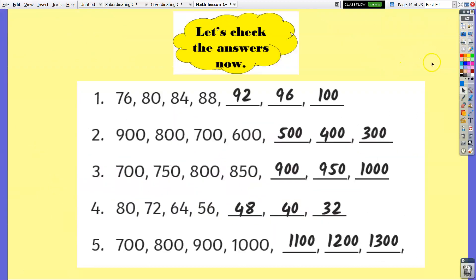Time is up. Now let's reveal the answers. After 88 is 92, 96 and 100—this is counting by 4s. Next we got after 600: 500, 400, 300, going to the least in hundreds. For number 3, counting by 50s: after 850 comes 900, 950, then 1000. For number 4, counting by 8s from biggest to least: from 56 we get 48, 40 and 32. Finally, number 5, counting by hundreds from small to biggest: after 1000 comes 1100, 1200, then 1300.